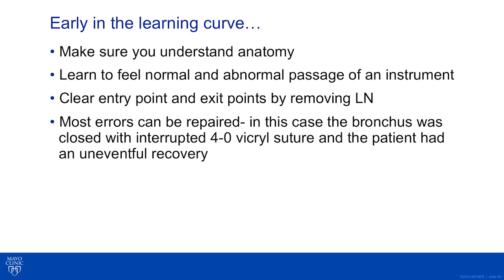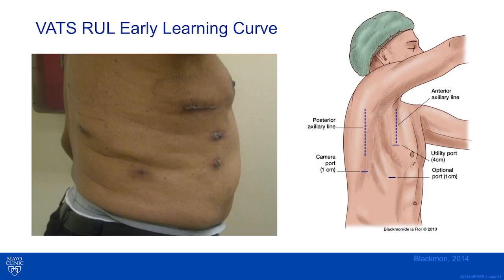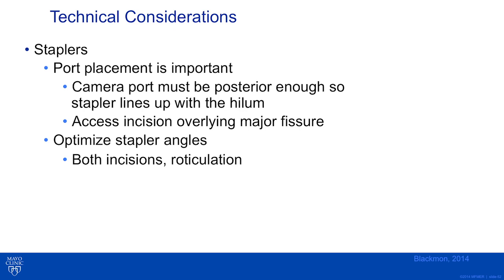4-0 PDS or 4-0 Vicryl suture can be used to close the bronchus. Early in the learning curve, make sure you understand anatomy — learn to feel normal and abnormal passage of an instrument, and clear the entry and exit points by removing lymph nodes. Most errors can be repaired. This first patient image shows mistakes made with too many ports at inappropriate angles. Better port placement and angles have been learned since, and placing an additional port or converting to open is not a failure. Camera ports must be posterior enough for the stapler to line up with the hilum; access incisions should overlie the major fissure.